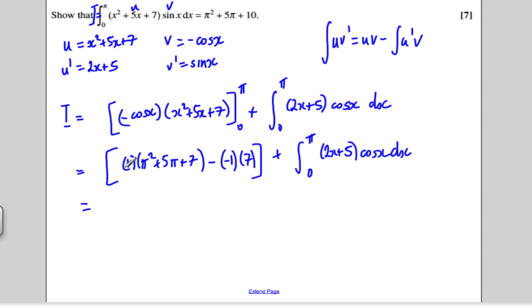Let's tidy this up fully. I get π squared plus 5π plus 7, and then a minus minus which is plus another 7. So this turns into π squared plus 5π plus 14 plus the integral between 0 and π of 2x plus 5 cos x with respect to x.